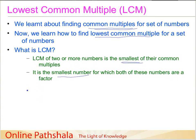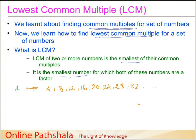Let us write down the number 4 and list the various multiples of 4. The multiples of 4 will be: 4, 8, 12, 16, 20, 24, 28, 32, and so on. We can go on. We have just taken the first few multiples of the number 4.